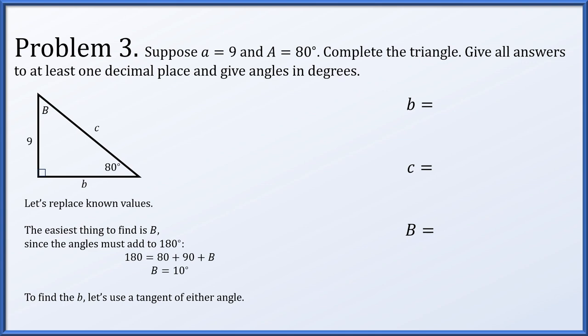To find side b, let's use tangent, because that doesn't incorporate the hypotenuse, which we haven't solved for yet. Just be careful whether you use angle A or angle B, the tangent of these angles will reverse what is considered opposite versus adjacent. So if we use the tangent of angle A, it's opposite over adjacent, and opposite to angle A is side a, and adjacent would be b. So the tangent of 80 degrees is 9 over b. Solving for b and computing, this is approximately 1.6.